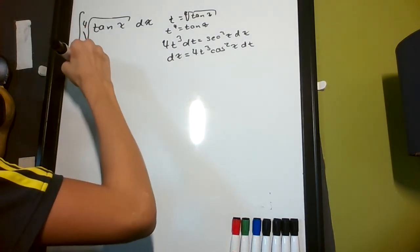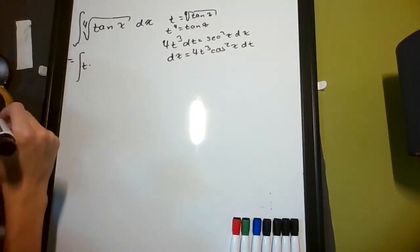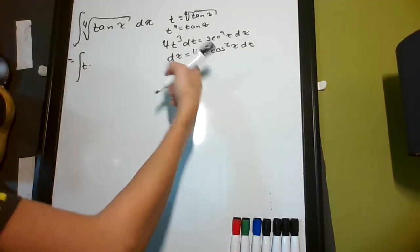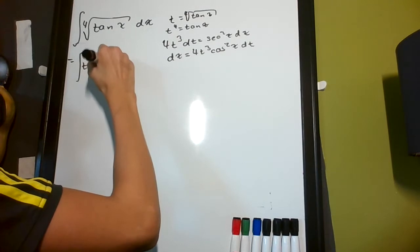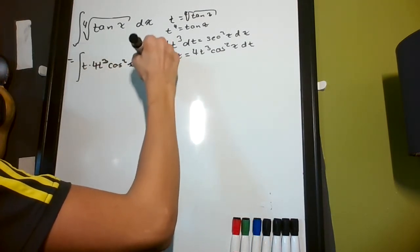I get the integral of t, because that right there is t, times, and then dx, which is going to be 4t cubed cosine squared x dt.